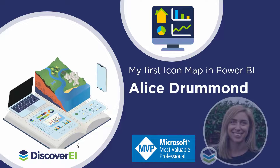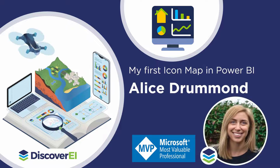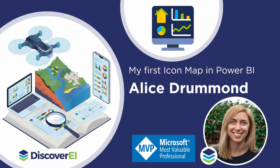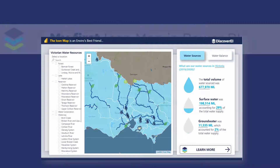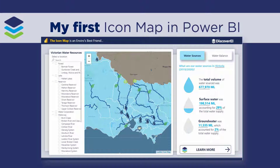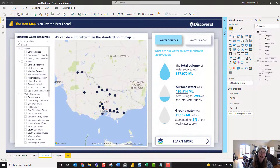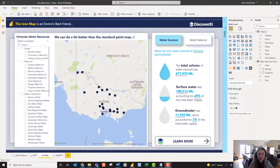Hi everyone, my name is Alice from Discovery Eye and I love using Power BI to really bring environmental data to life. In this short video I want to walk through how to get started using Icon Map, which is one of my favorite custom visuals for Power BI. I really want to create a very simple map today — just a simple point map to show where some forests, reservoirs, and wetlands are across Victoria.